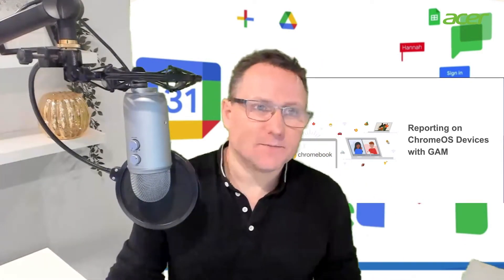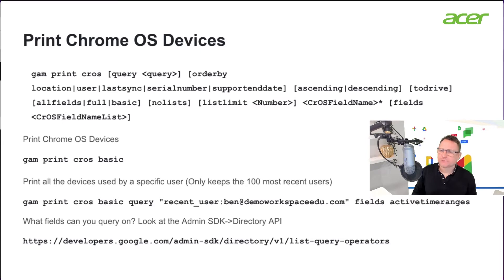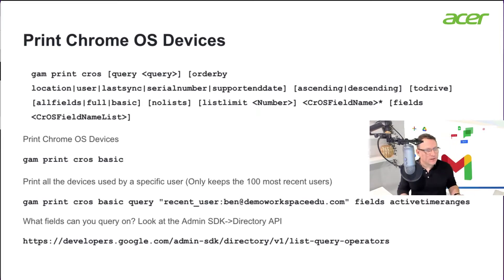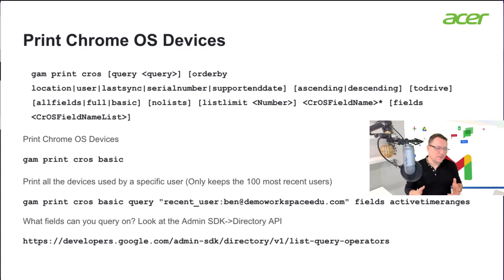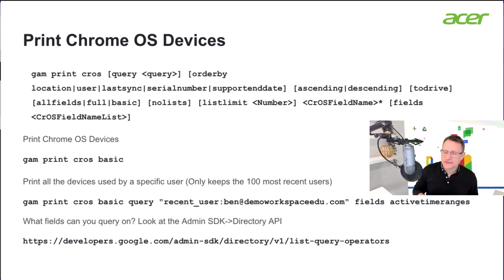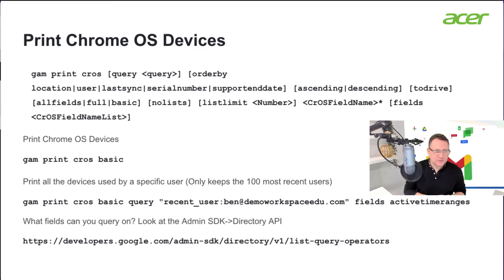So let's get started. The command we've got here is `gam print cros`, and then we can add a query — I'll show you in a moment where to get the query fields you can use. You can order results by location, user, last time synced, serial number, and if you bought your devices directly from Google, by support end date — ascending or descending. You can send that listing to Drive, print it to the screen, or pipe it out to a text file.